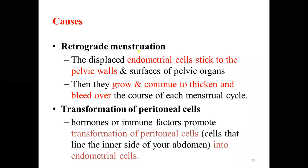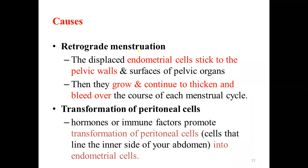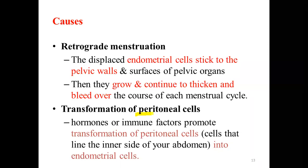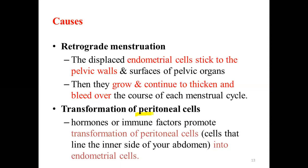The most common causes of endometriosis include retrograde menstruation. Apart from that, there is a possibility of transformation of peritoneal cells — because of immune factors or hormonal imbalances, peritoneal cells lining the inner side of the abdomen can transform into endometrial cells and continue to grow and proliferate.